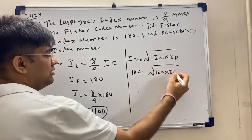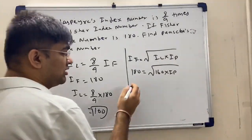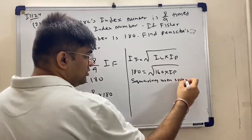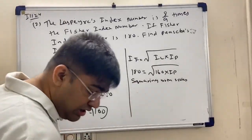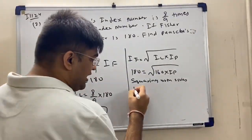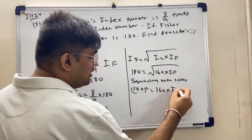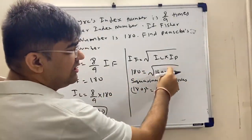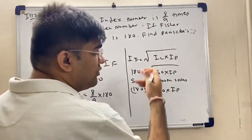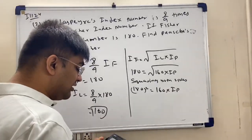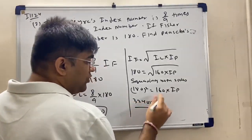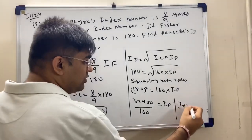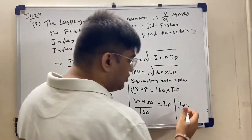Now, Fisher IF equals root of IL into IP. So 180 equals root of 160 into IP. Squaring both sides: 180 squared equals 32,400 equals 160 into IP. Therefore IP equals 32,400 divided by 160, which equals 202.5.